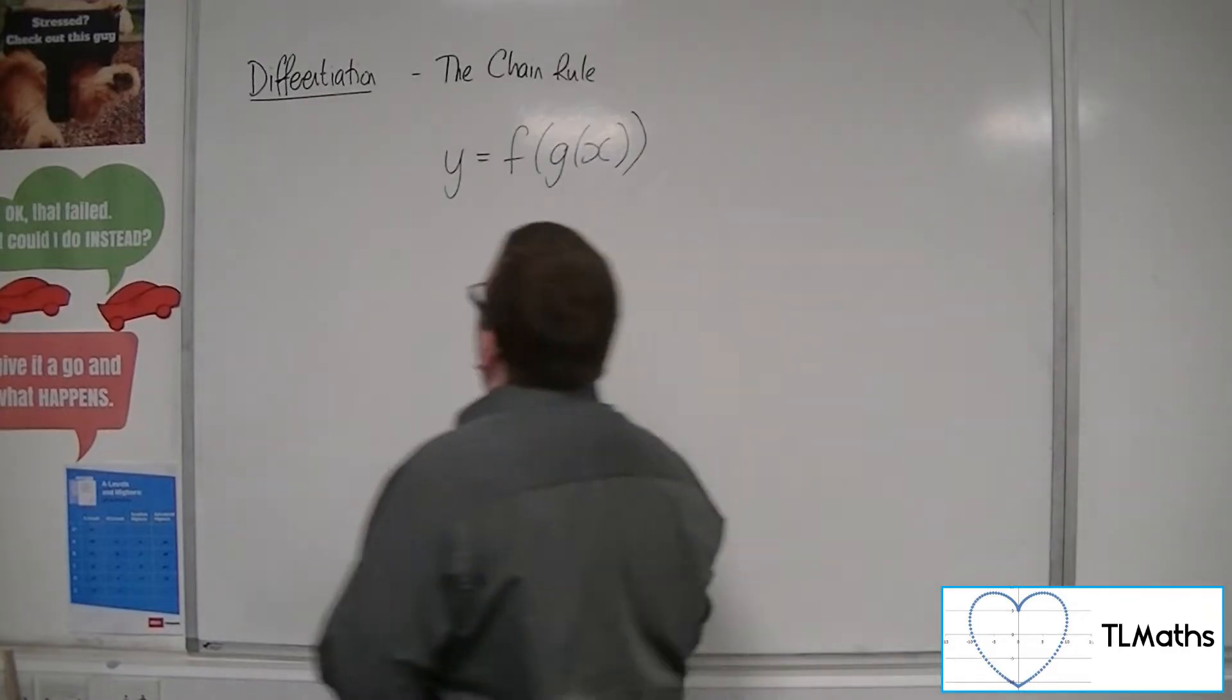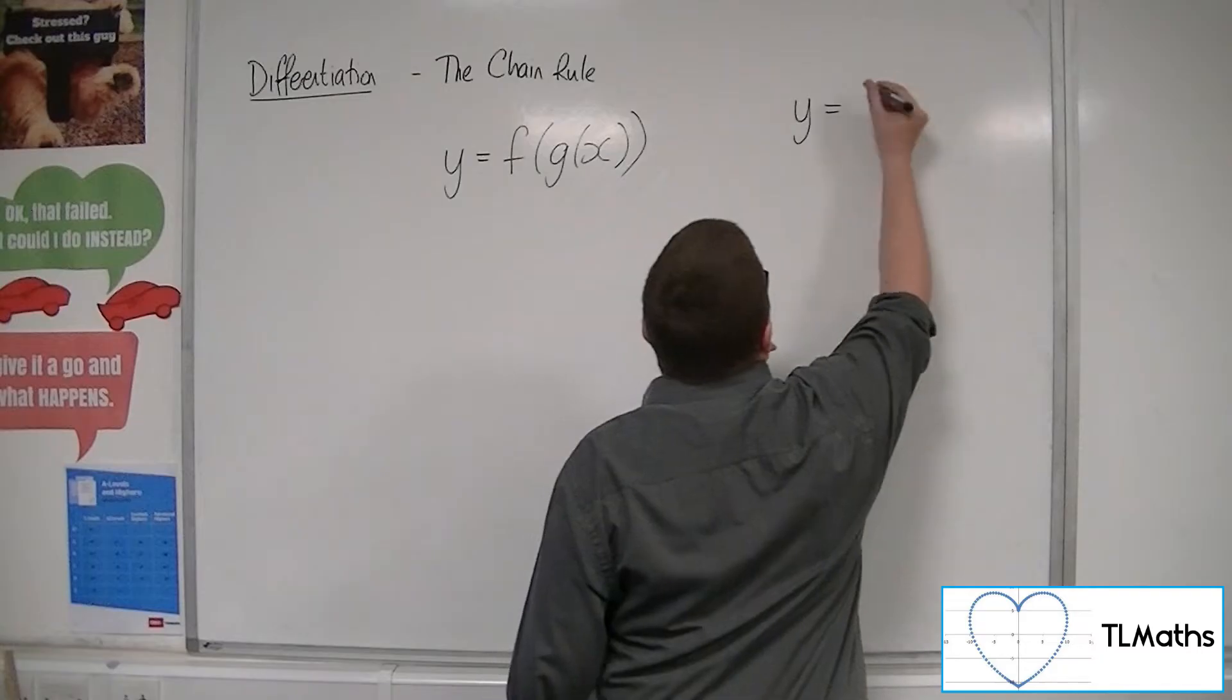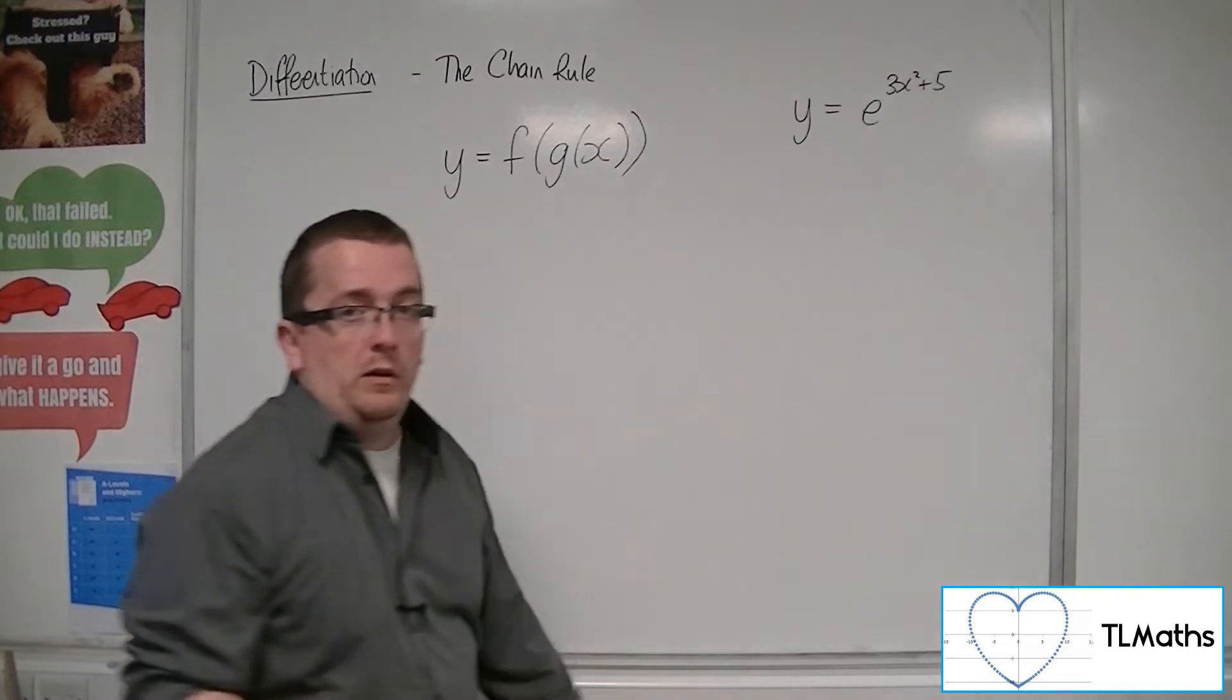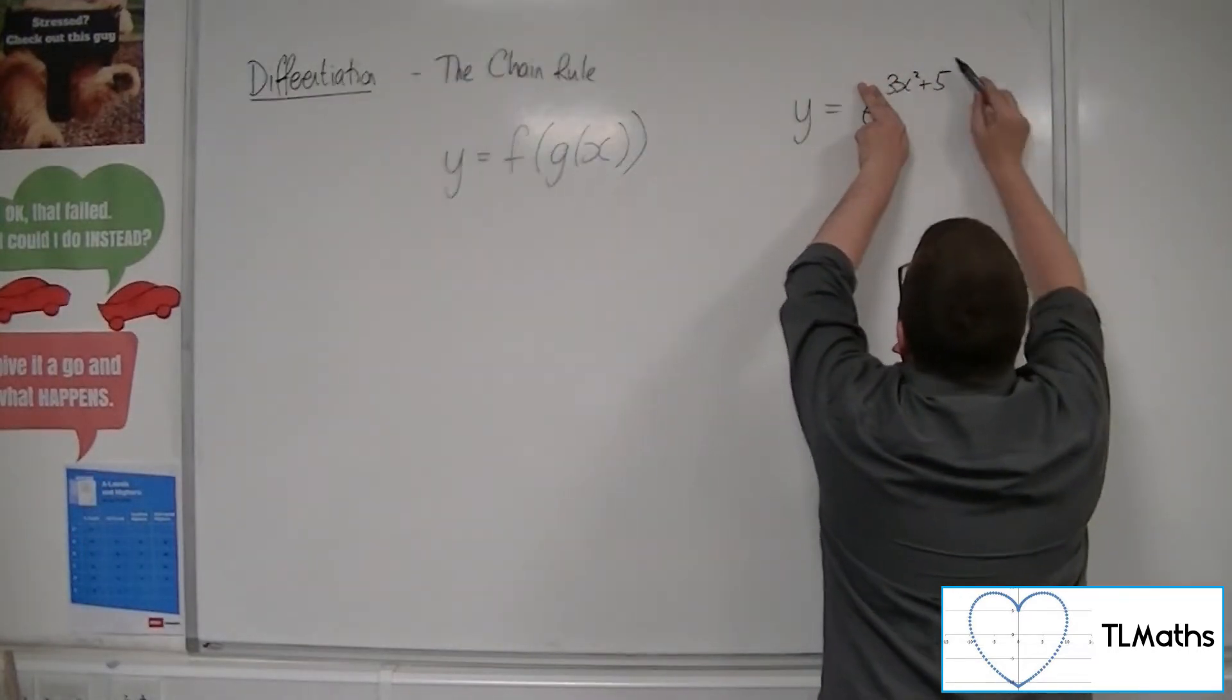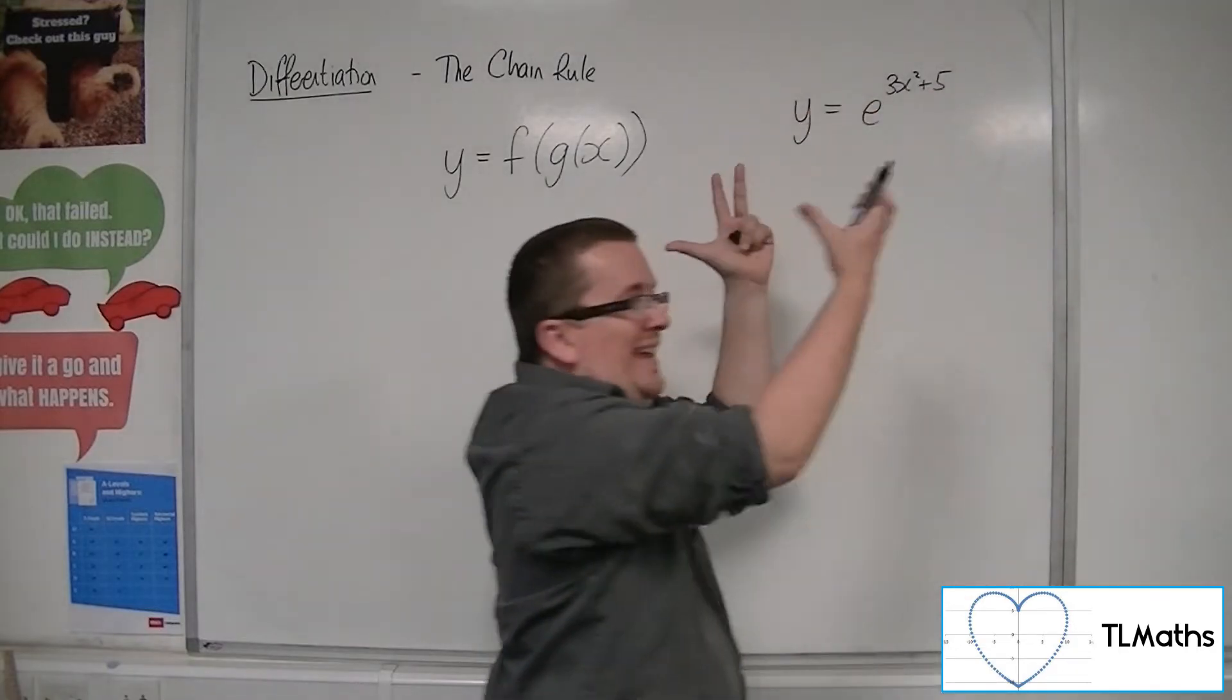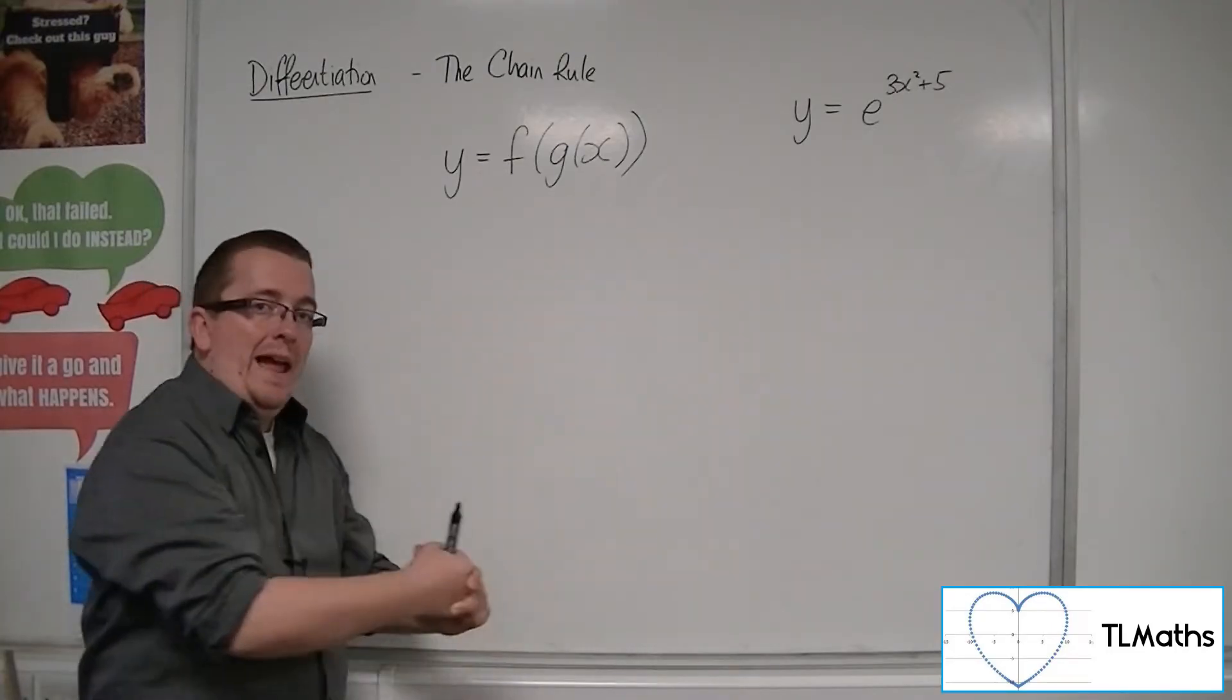It allows you to differentiate things like y equals e to the 3x squared plus 5, for example, where you have this g of x, the 3x squared plus 5, within e to the x. The g of x has been placed into f.